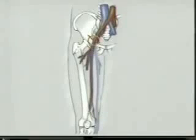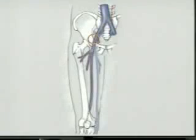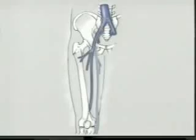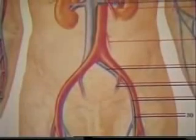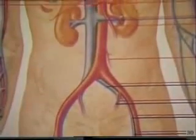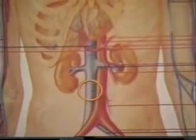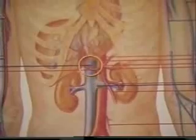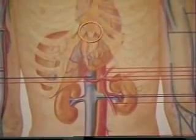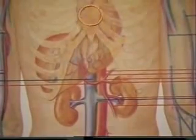Crossing the inguinal ligament, the common femoral vein becomes the external iliac vein in the pelvis. The external iliac vein is then joined by the internal iliac vein and becomes the common iliac vein. Finally, the common iliac veins from both the right and left sides join at the level of the umbilicus to become the inferior vena cava, which drains directly into the heart.